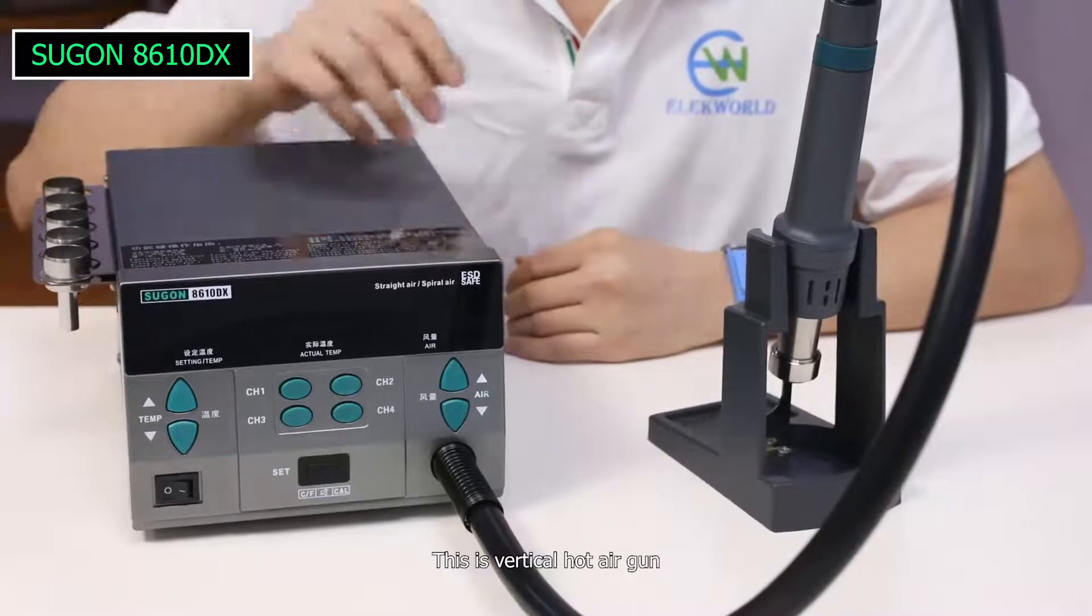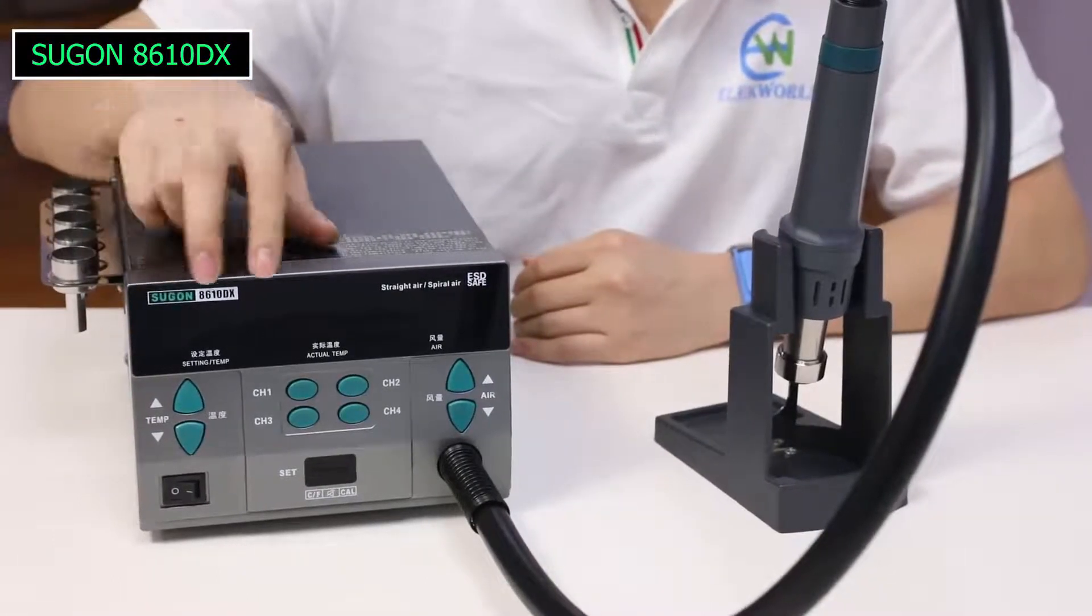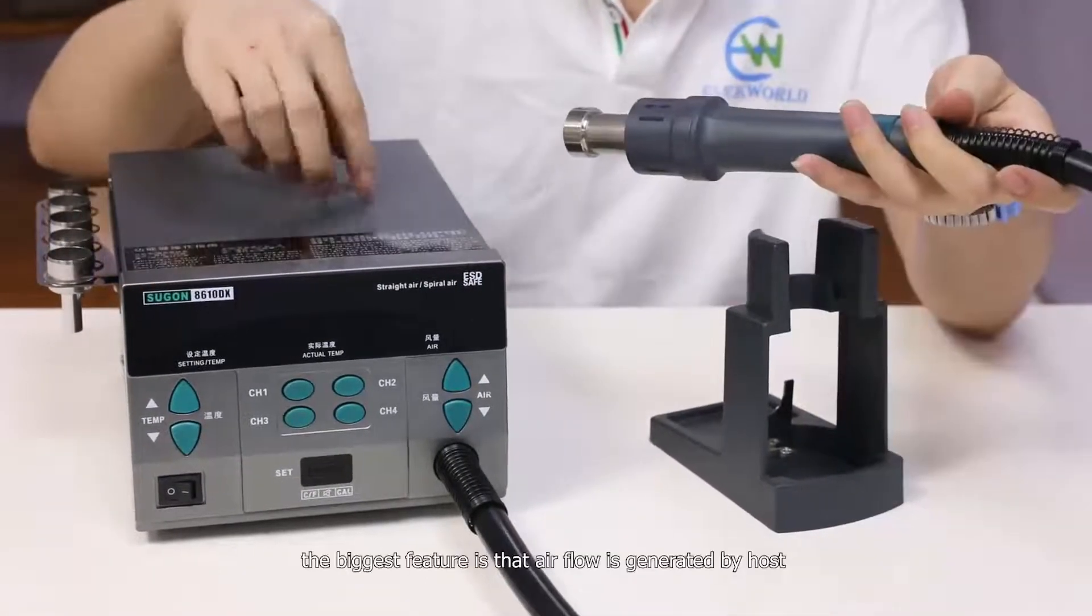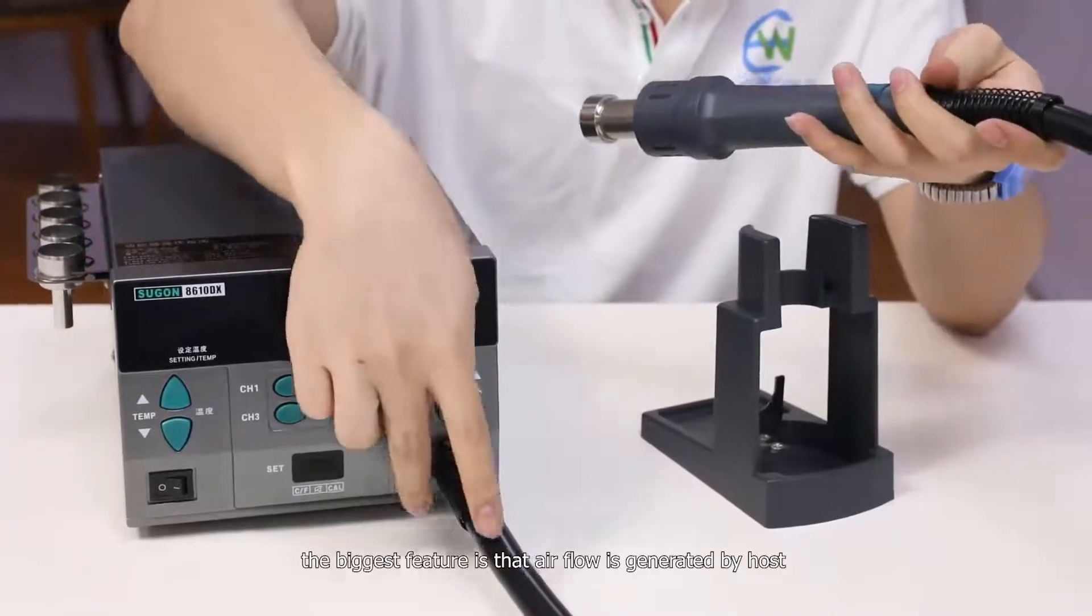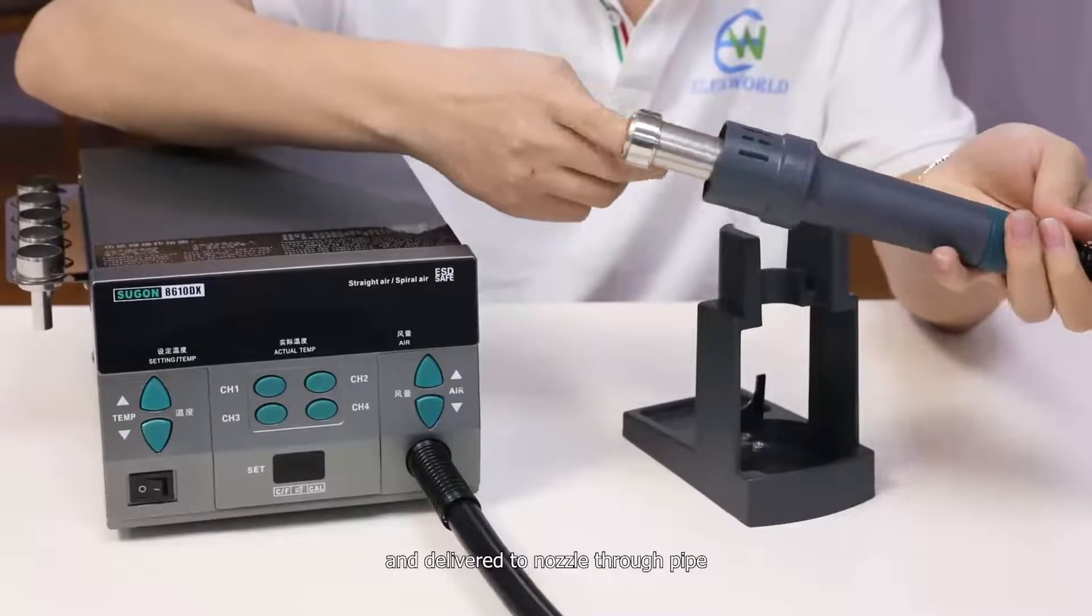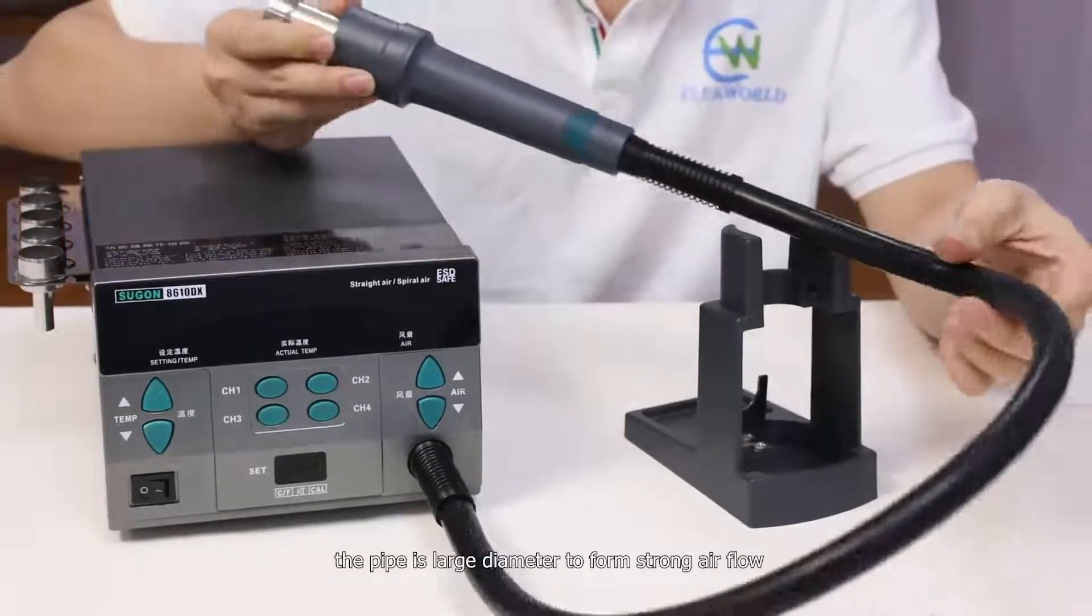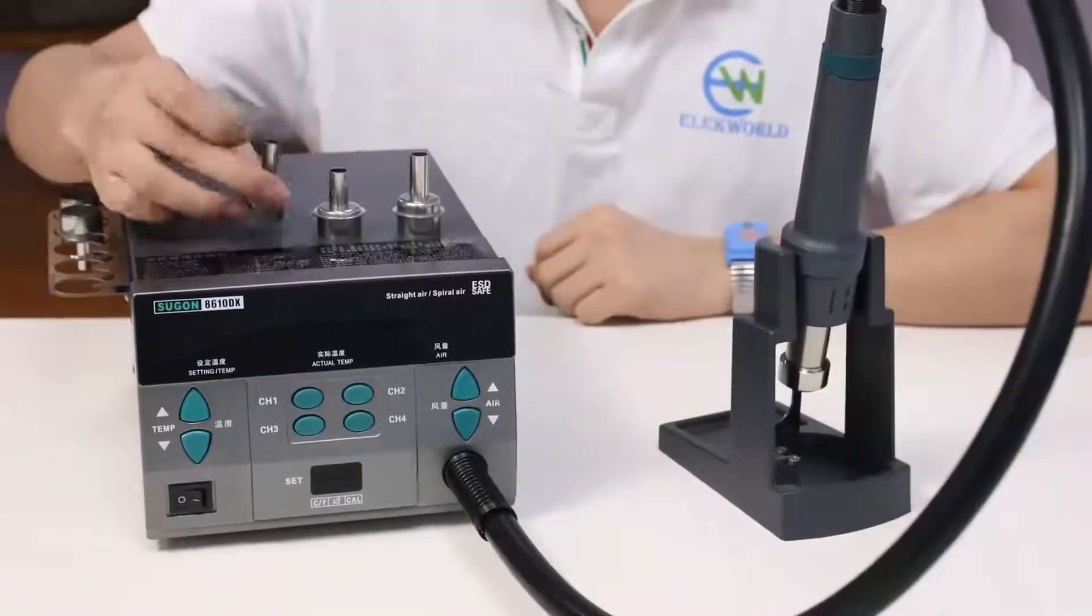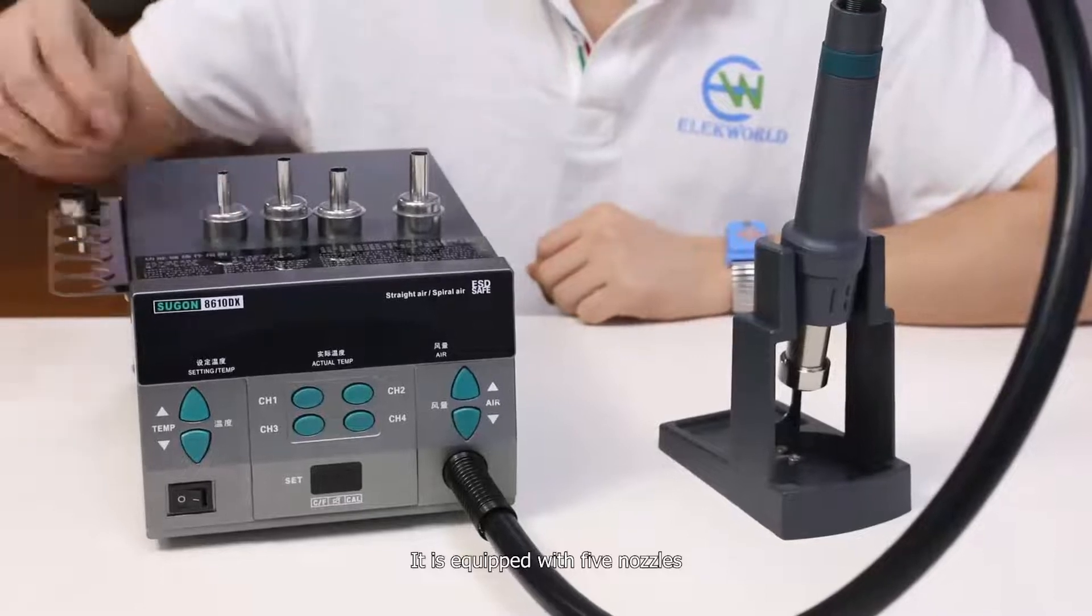This is a vertical hot air gun. The biggest feature is that the airflow is generated by host and delivered to nozzle through pipe. The pipe is large diameter to form strong airflow. It is equipped with five nozzles.